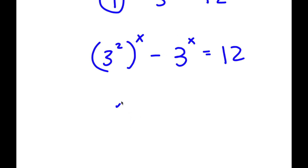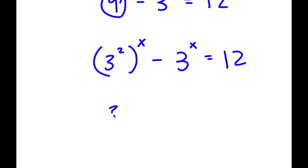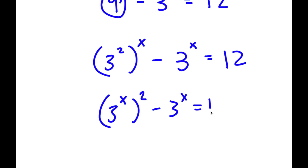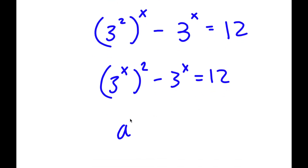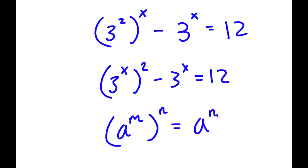I'm going to rewrite 3 to the power of 2 to the power of x as 3 to the power of x to the power of 2. Because if I have something in the form a to the power of m to the power of n, this is also equal to a to the power of m times n.